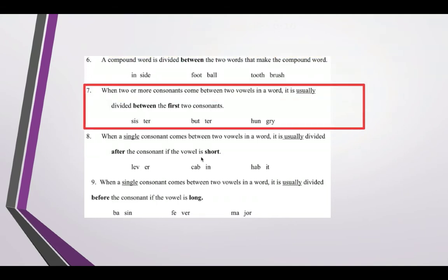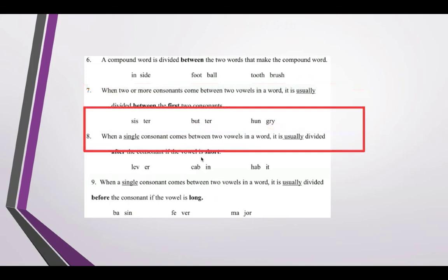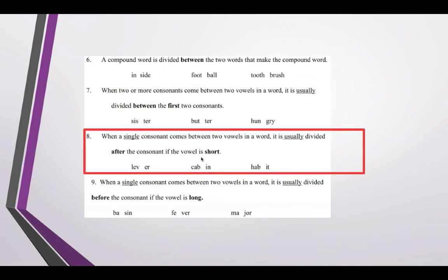When two or more consonants come between vowels in a word, it's usually divided between the first two consonants. 'Sister' — you divide after the S before the 'ter.' 'Butter.' 'Hungry.' When you have a single consonant between two vowels, it's usually divided after the consonant if the vowel is short. 'Lever,' 'cabin,' 'habit' — you're dividing after that single consonant.